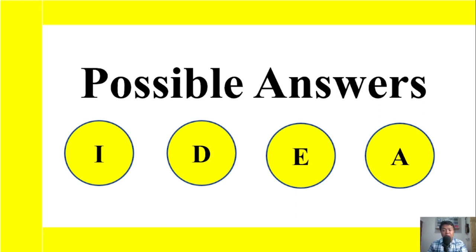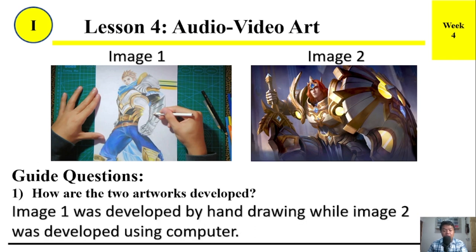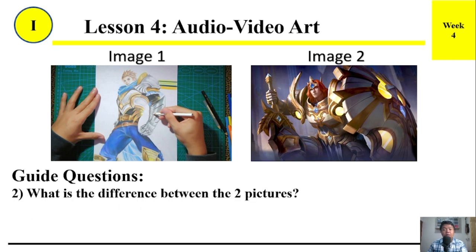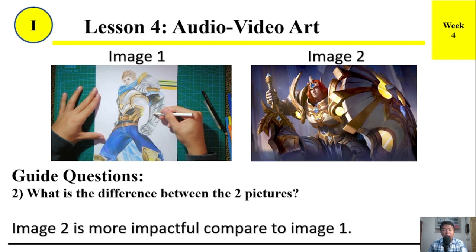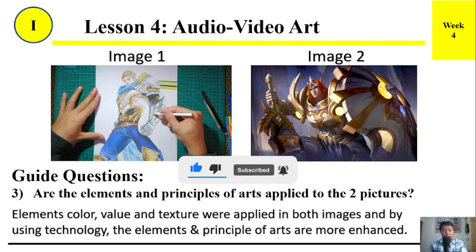Here are the possible answers. Number 1: How are the two artworks developed? Image 1 was developed by hand drawing while Image 2 was developed using a computer. Number 2: What is the difference between the two pictures? Image 2 is more impactful compared to Image 1. Number 3: Elements — color, value, and texture — were applied in both images, and by using technology, the elements and principles of art are more enhanced.